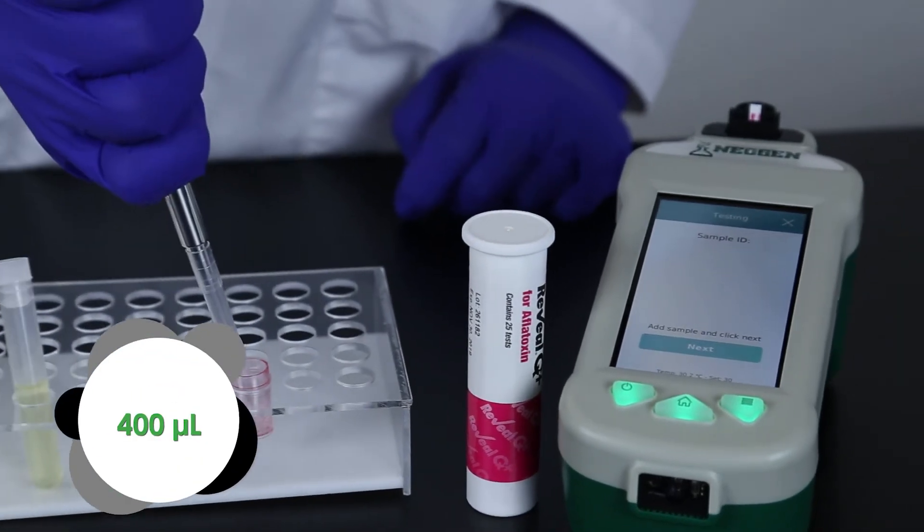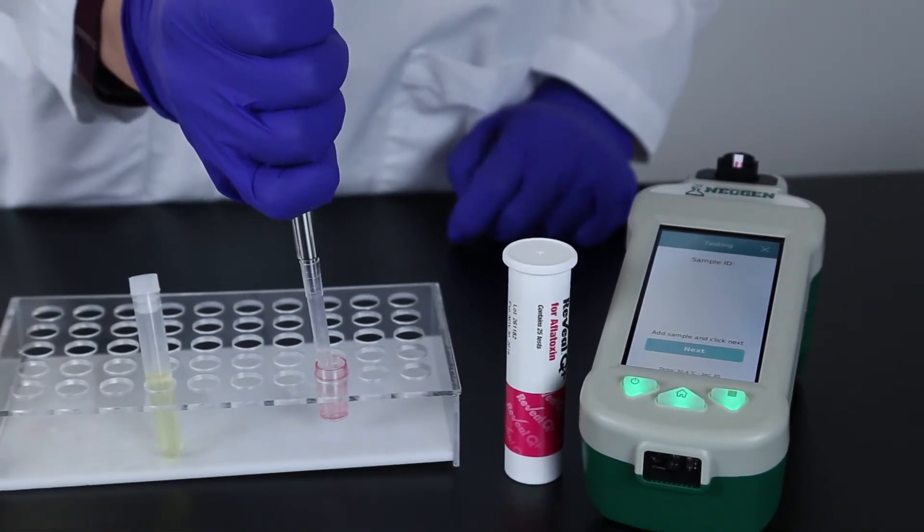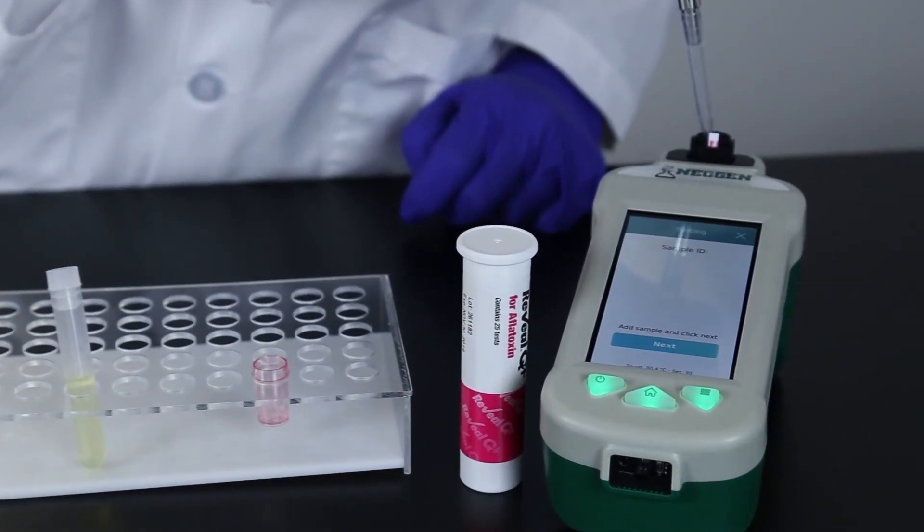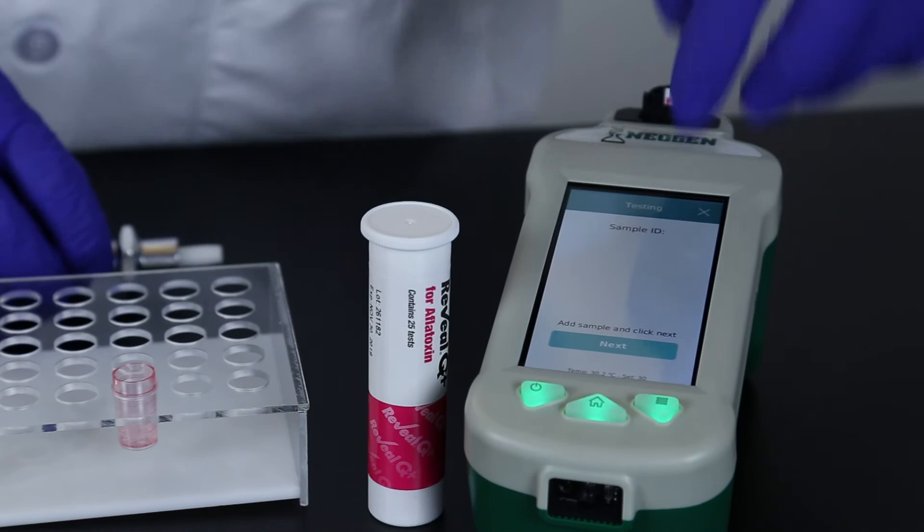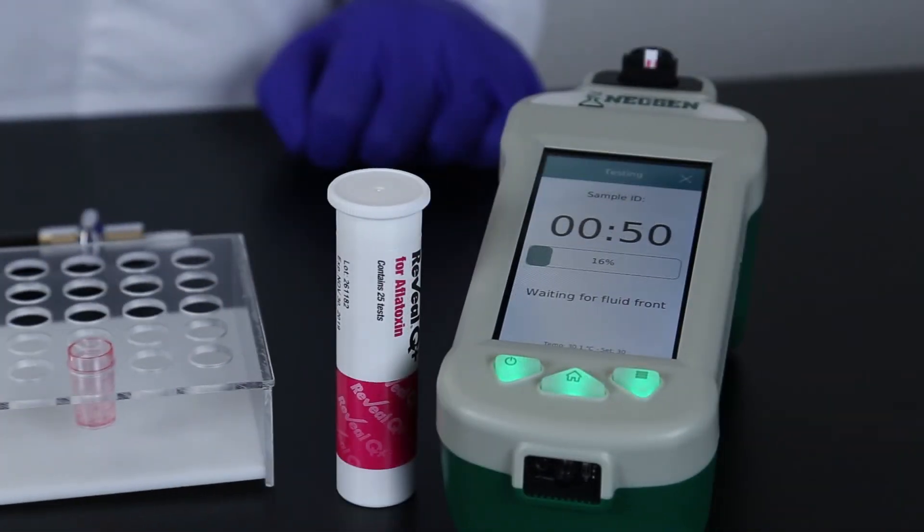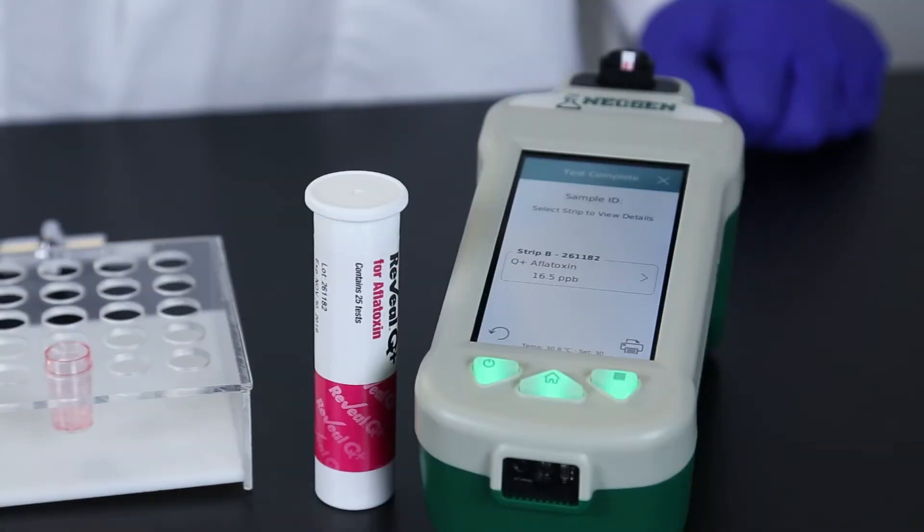Pipette 400 microliters of sample into the Raptor cartridge. The system and timer will start as soon as it detects the fluid front on the sample strip. After the six-minute testing time, the Raptor displays your results.